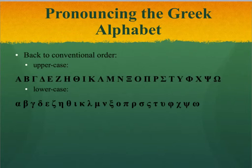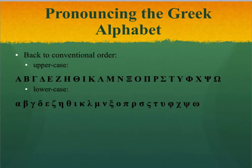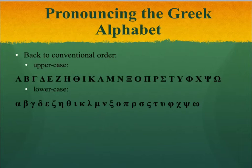Finally, here are the letters in their conventional alphabetical order. You should learn them in this order because you'll need to look words up in dictionaries and glossaries, and this will be the order in which they're presented. Alpha (A), Beta (B), Gamma (G), Delta (D), Epsilon (E), Zeta (ZD), Eta (E), Theta (TH), Iota (I), Kappa (K), Lambda (L), Mu (M), Nu (N), Xi (X), Omicron (O), Pi (P), Rho (R), Sigma (S) — note that Sigma has two forms: one that comes at the end of words, and another that comes inside words.